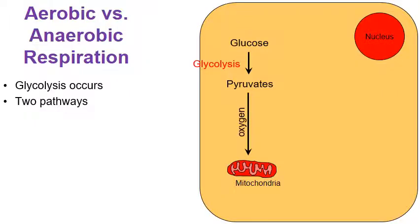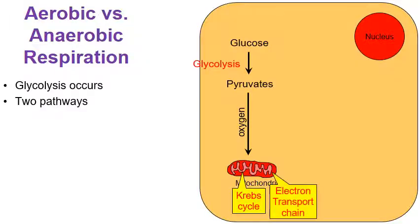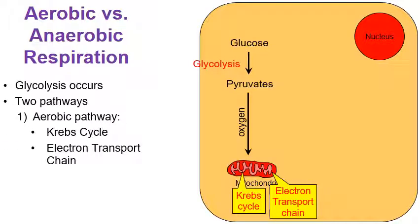If oxygen is present, those pyruvates generally will head to the mitochondria, and within the mitochondria is where the Krebs cycle occurs, followed by the electron transport chain. These steps — glycolysis, the Krebs cycle, and the electron transport chain — generally make a lot of ATP. One molecule of glucose can make anywhere from 36 to 38 molecules of ATP. This is viewed as the aerobic pathway, the pathway the cell typically follows with the presence of oxygen.